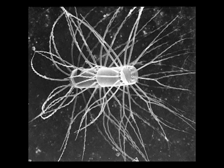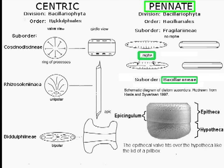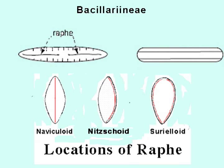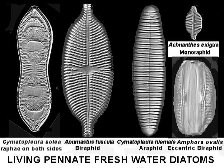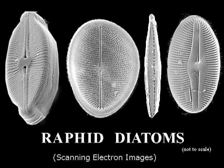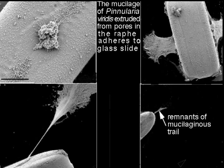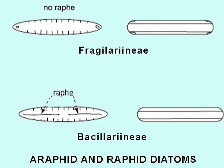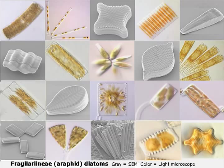Diatoms with elongate, generally bilaterally symmetrical valves are called pennates. They are placed in one of two suborders. The Bacillariineae are those with a raphe — a slit or slits between the valve faces of a monoraphid or a biraphid diatom. The most common site for the raphe is along the apical axis. Through the specialized pores in the slit, some diatoms exude strands of mucilage that adhere to the substrate and by flowage provide them with locomotion. Pennates without raphe are assigned the suborder Fragilariineae. These too can exude mucilage, here used for fixation.